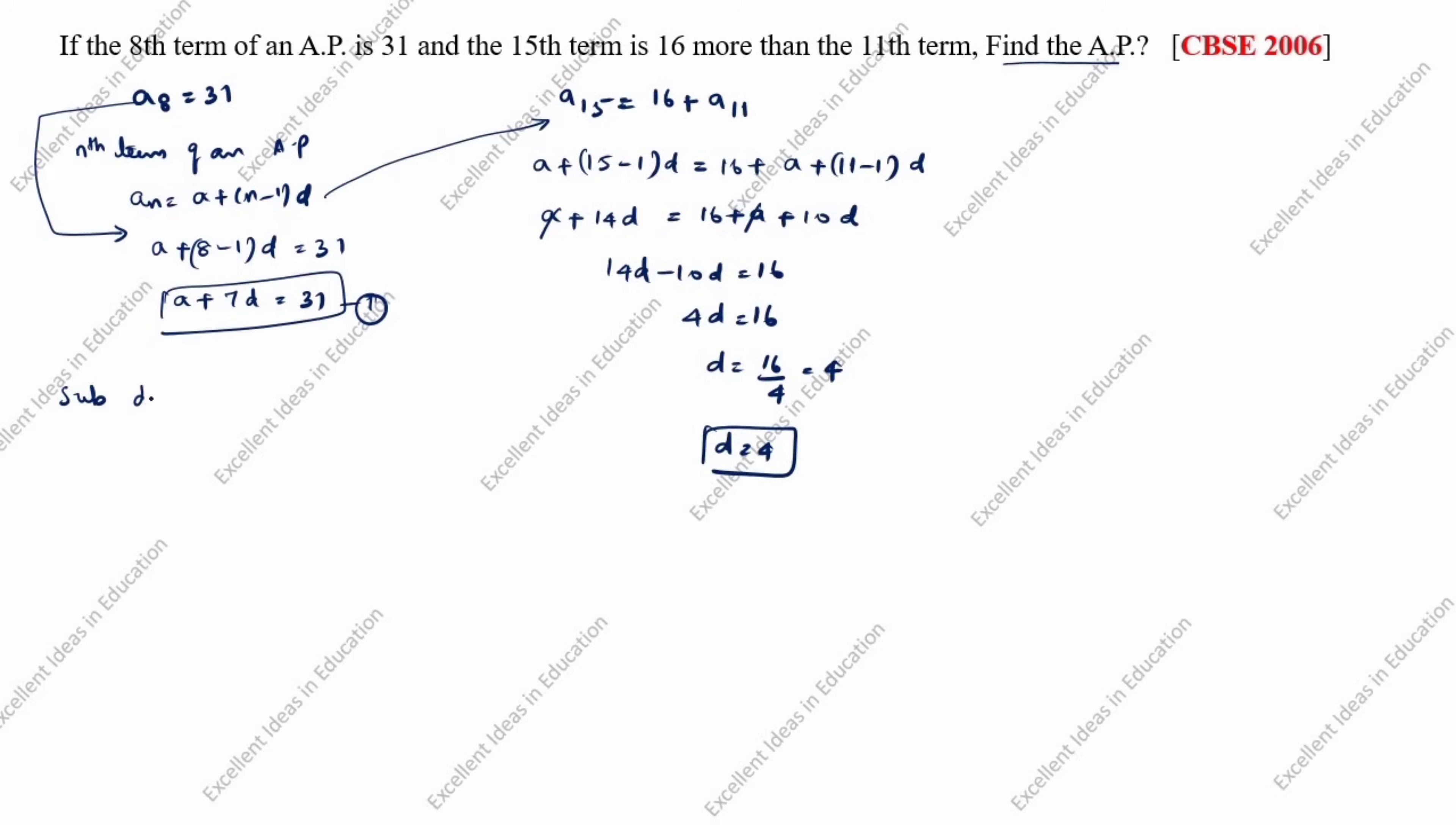Substitute D equals 4 in equation 1. A plus 7D equals 31. A plus 7 into 4 equals 31. A plus 28 equals 31. A equals 31 minus 28. A equals 3.